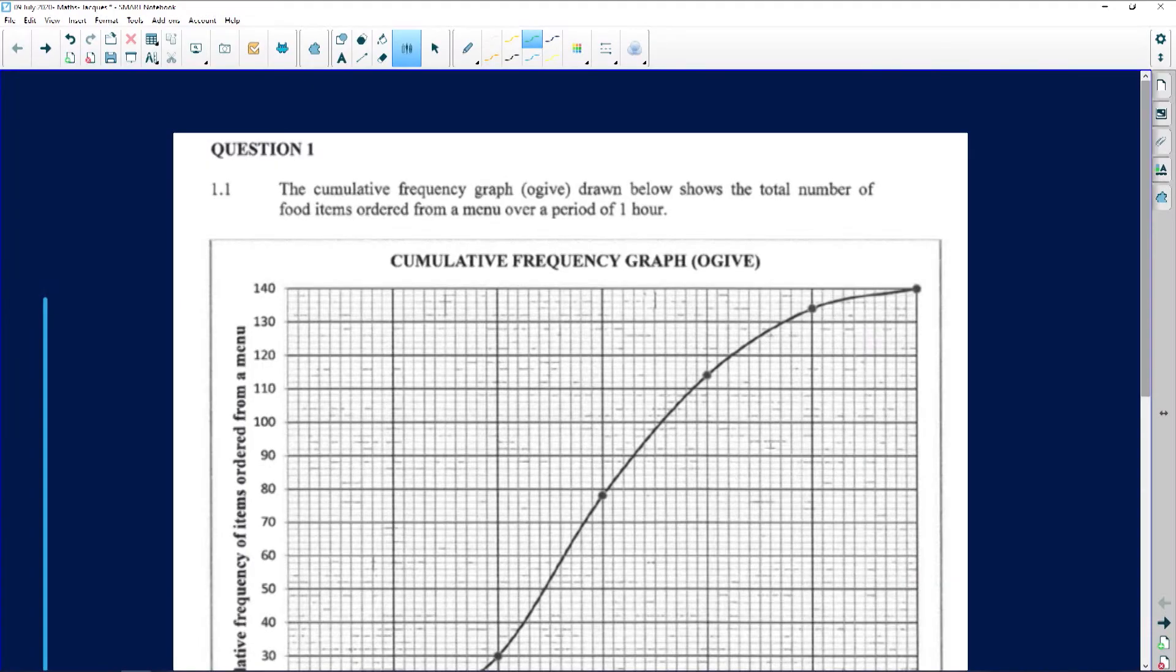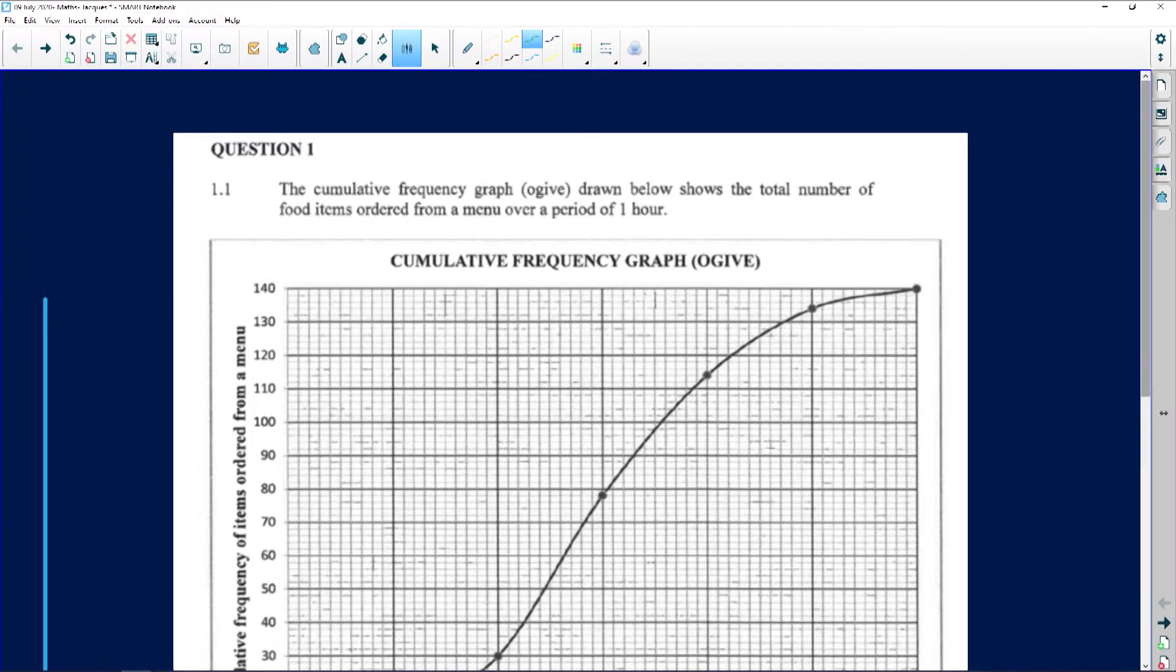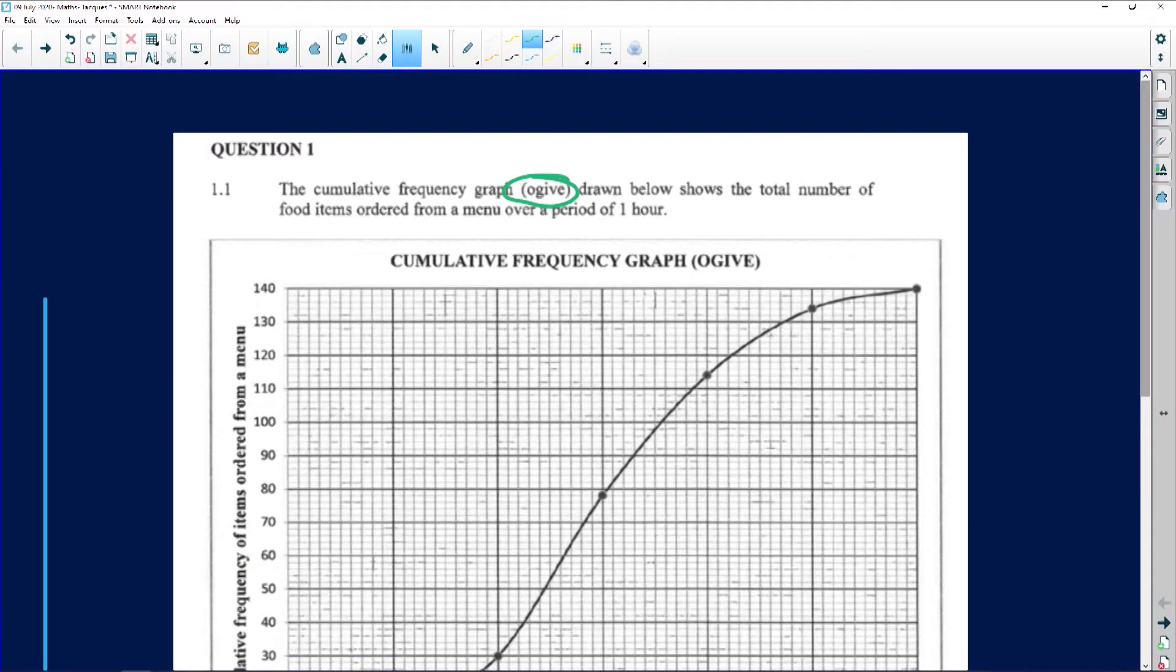Okay folks, let's have a look. The first question is on the screen. The question says the cumulative frequency graph, now we know a cumulative frequency graph is an ogive. In Afrikaans, they call it an ogif. So it's an ogive. It's drawn below and shows the total number, this is important, the total number of food items ordered from a menu over a period of an hour.